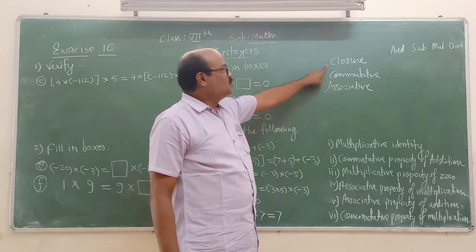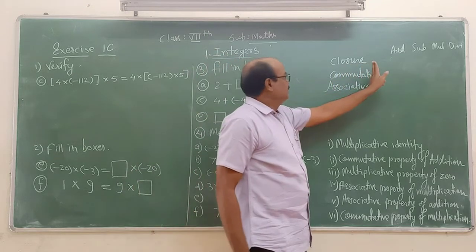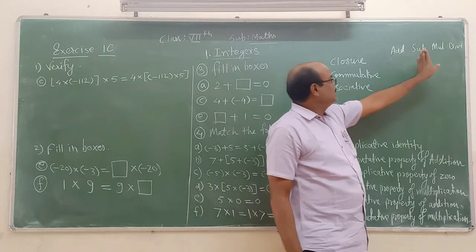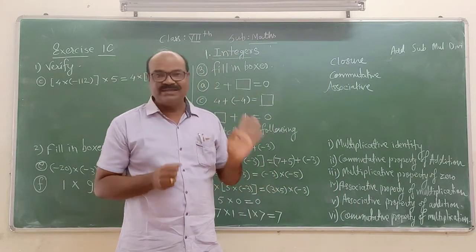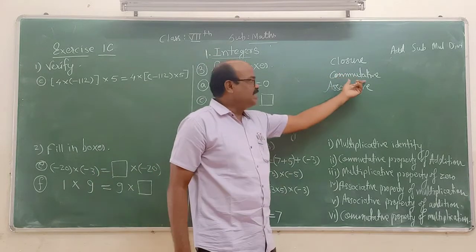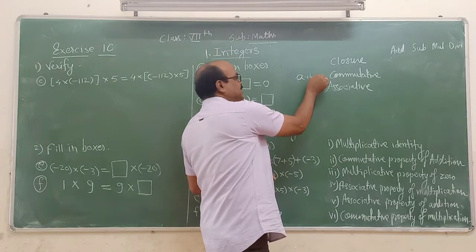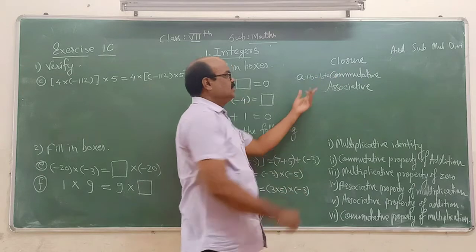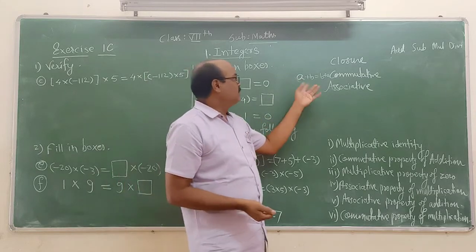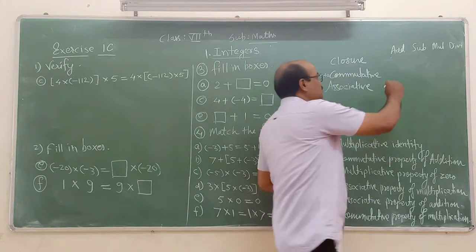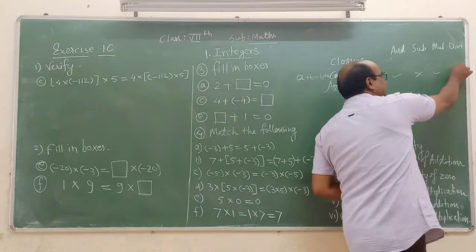Regarding closure property, what we have seen: that if addition, subtraction, multiplication, or division of two integers is an integer itself, then it holds, otherwise not. Regarding commutative property — A plus B equals B plus A — means only two integers we are considering. Under addition it holds, subtraction it does not, under multiplication it holds, division it does not.